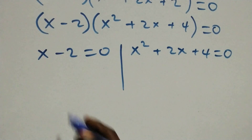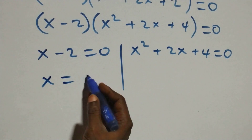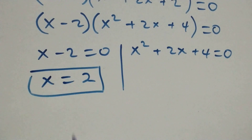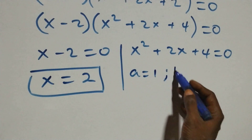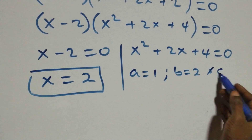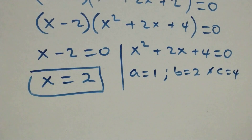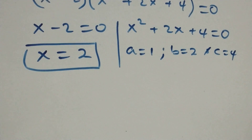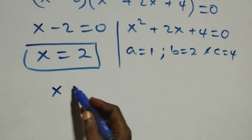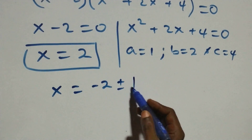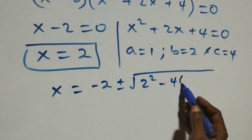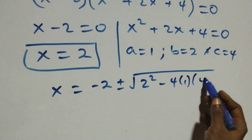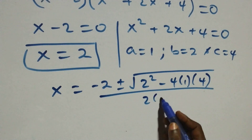From the first sub-case, x = 2, which is a real solution. For the quadratic x² + 2x + 4 = 0, we have a = 1, b = 2, and c = 4. Applying the quadratic formula gives x = (-2 ± √(2² - 4·1·4)) / (2·1).